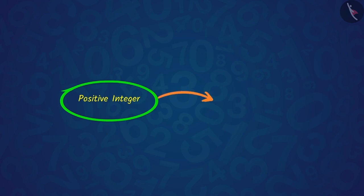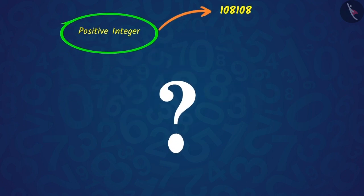Let us factorize a positive integer, say 108,108. Can you show how to factorize this number?